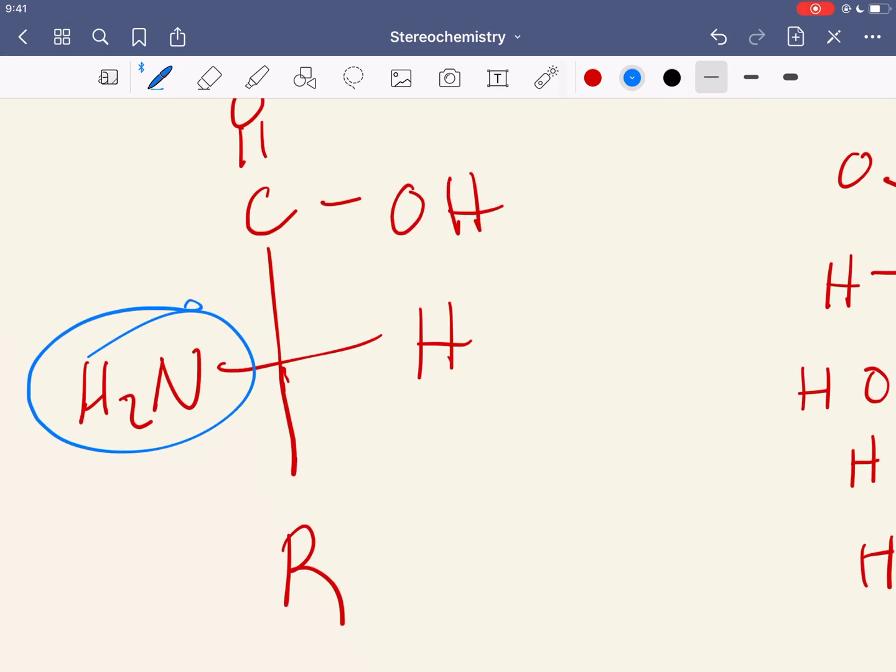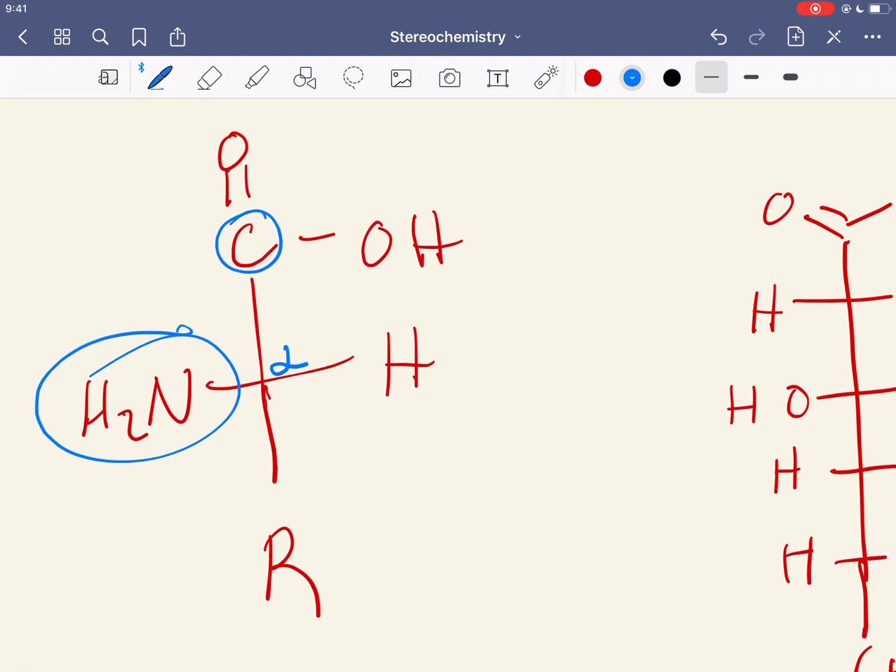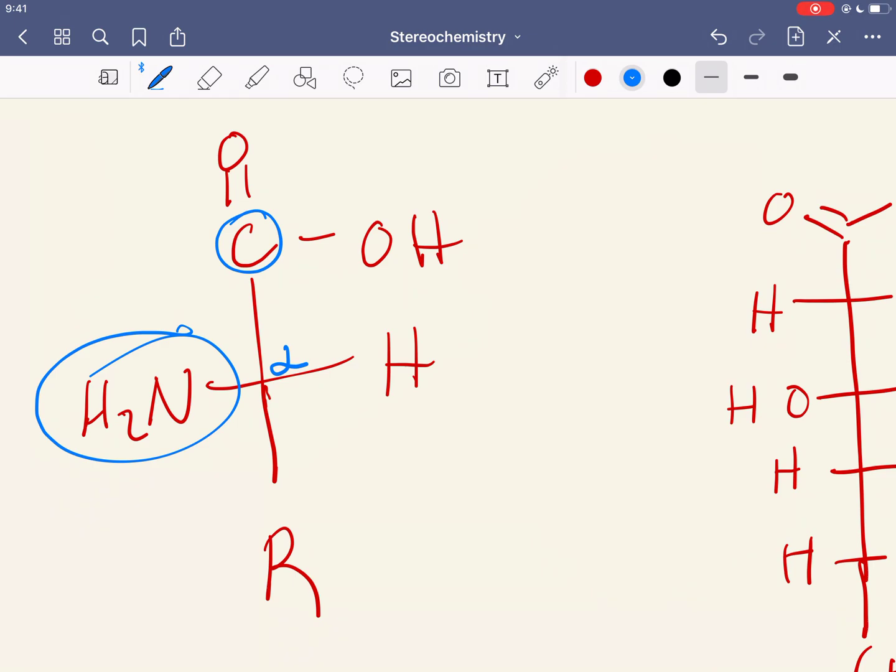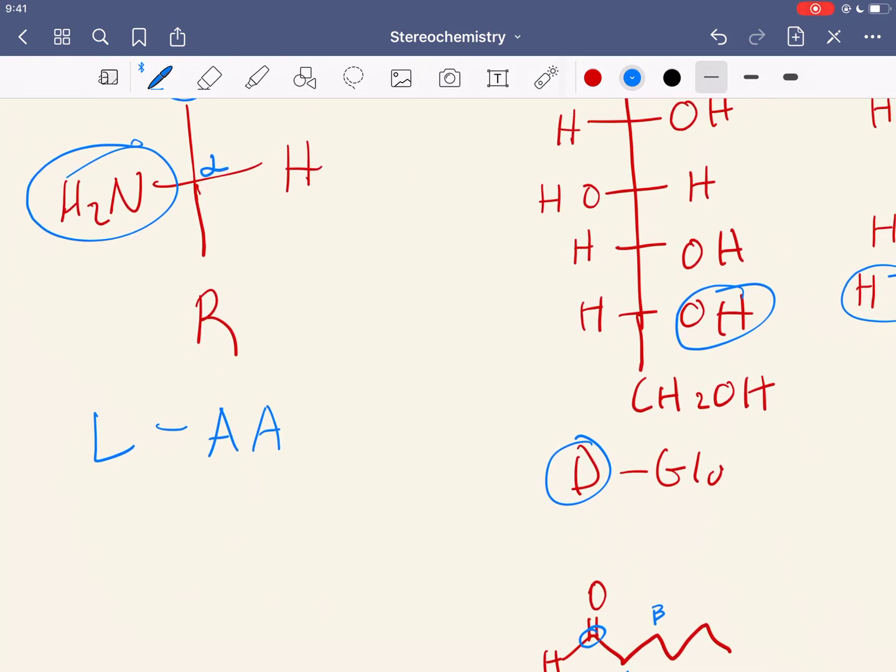And then when we have amino acids, we often talk about the alpha carbon being the one that is bonded to the R group and bonded to the carboxylic group and the amine group and all of that. It's alpha because this is the carbonyl, and then next to it is this guy, which is the alpha carbon. So that's what we mean when we say alpha or beta.